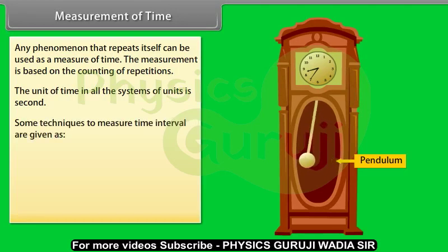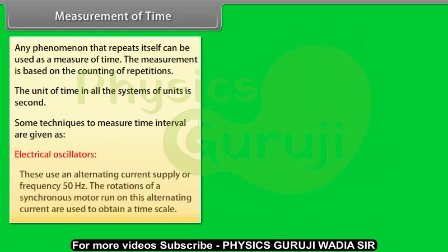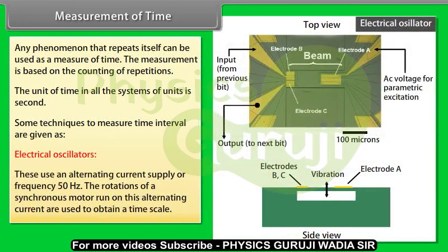Some techniques to measure time interval are given as: Electrical oscillators use an alternating current supply of frequency 50 hertz. The rotations of a synchronous motor run on this alternating current are used to obtain a time scale.